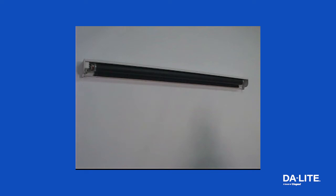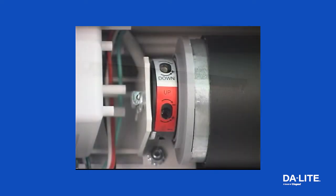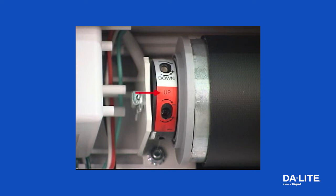Refer to the instructions of your specific model for details on accessing the motor. The switch labeled down is used to adjust the bottom limit and the switch labeled up will adjust the top limit. The colors of these switches may vary depending on your model screen.